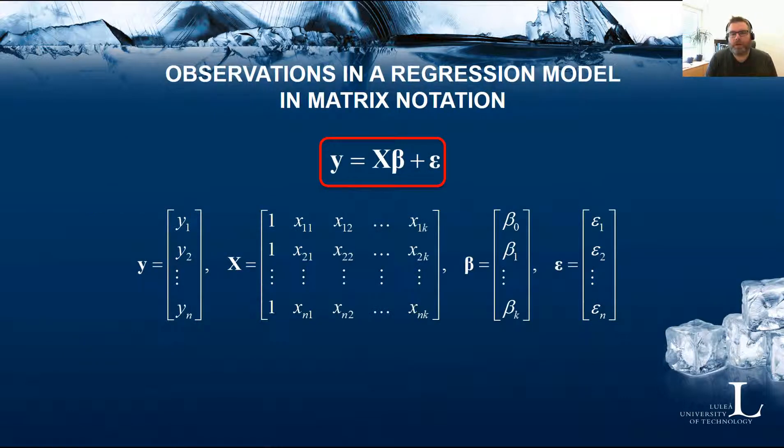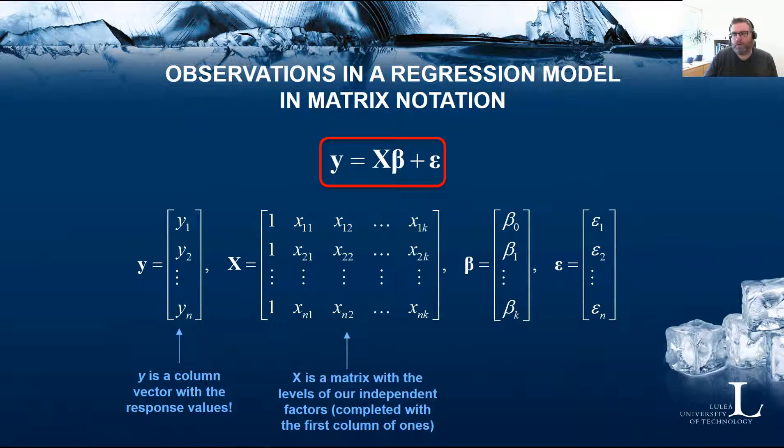We'll move on to writing the observations in a regression model in matrix notation. Here you have the matrix notation: y is equal to X beta plus epsilon. This is a column vector, this is also a column vector, and this is a matrix and a column vector. We have y as a column vector with our response values y1, y2, and so on. We have X as the matrix with the levels of our independent factors, completed with the first column of 1s. We can view this as our experimental design matrix.